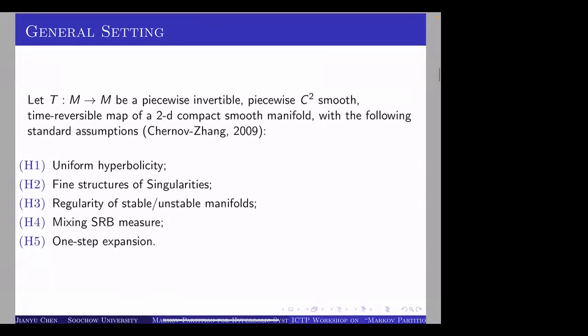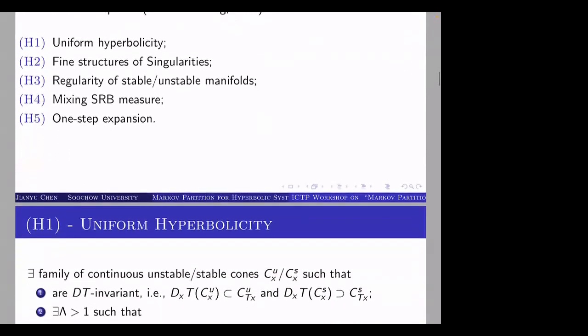We need to add the following assumptions. The first one is uniform hyperbolicity. The second is kind of complicated but crucial, concerning the structure of singularities. The third is about the regularity of stable and unstable manifolds, which is standard in differentiable dynamical systems. The fourth assumes there is an SRB measure and we take a mixing component. The last one is a feature specific to billiard-like systems, called one-step expansion.